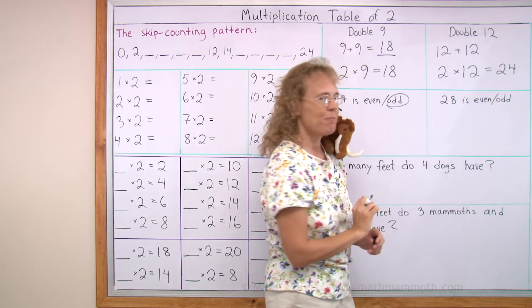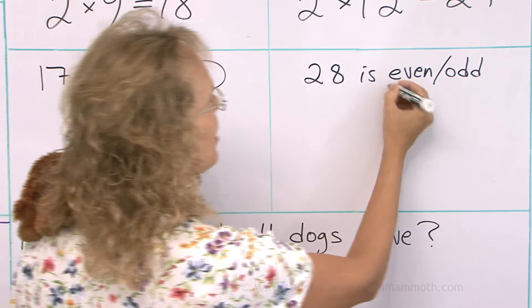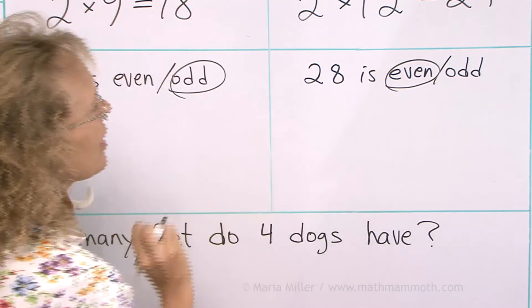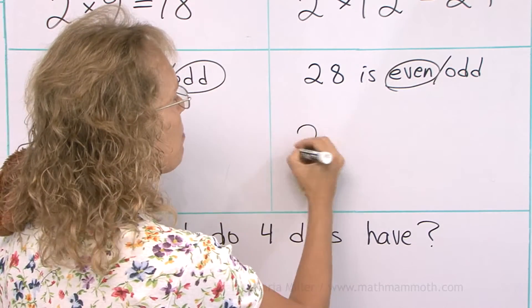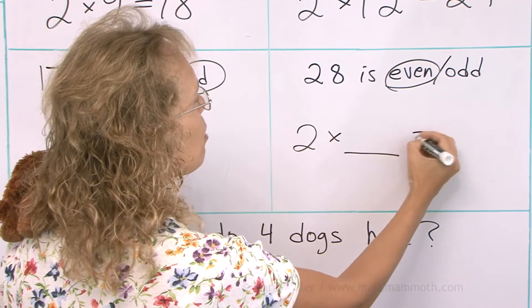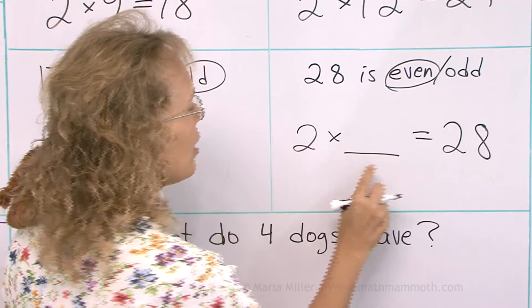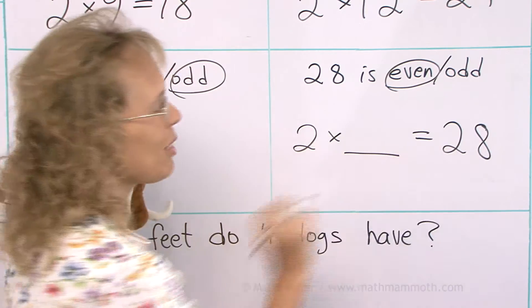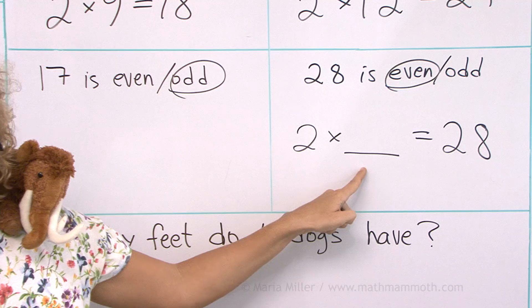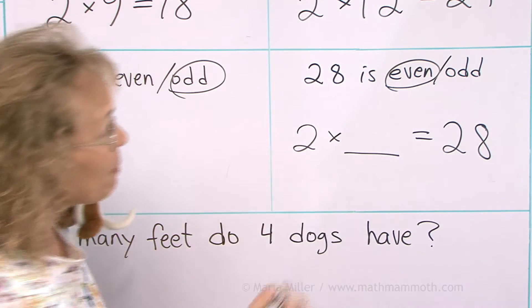How about 28? It's an even number, right? Ends in eight. And I can write two times something equals 28. A double of some number makes 28. What number? Can you tell? It should be 14.